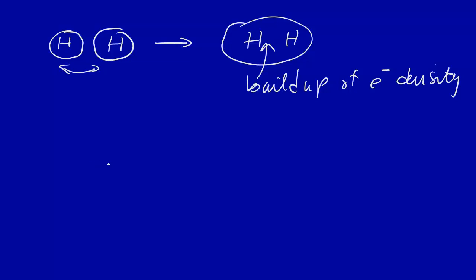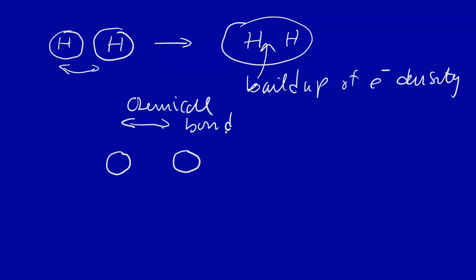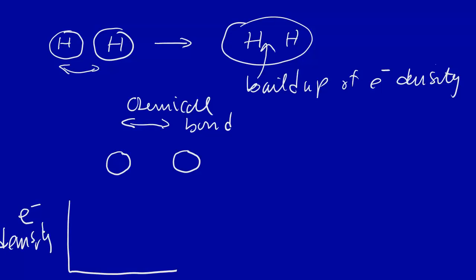For example, let's look at the oxygen molecule. Here's one oxygen, here's another, and they're close enough together so that there's a chemical bond between them. Now let's look at electron density as we go from one side to the other. We'll plot here electron density — which in quantum mechanics we could call the square of the wave function of the molecule, but just for now let's call it electron density — versus distance r.